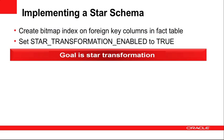So how do you implement a star schema in an Oracle data warehouse? Typically you need to do two key activities in order to achieve star transformation. The two activities are: create a bitmap index on each of the foreign key columns in the fact table, and set the init.ora parameter star_transformation_enabled to true. Both of these together are going to allow us to do star transformation.